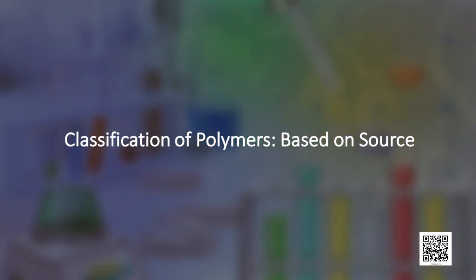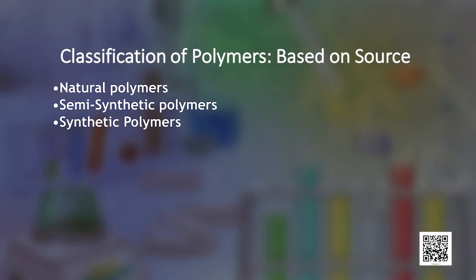These properties make synthetic polymers exceptionally useful. There are several ways of classifying these polymers based on certain special considerations. We will discuss five different ways of classification, starting with classification based on source. Under this type of classification there are three subcategories: natural polymers, semi-synthetic polymers, and synthetic polymers.